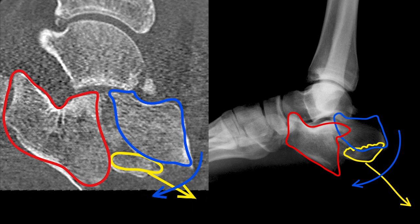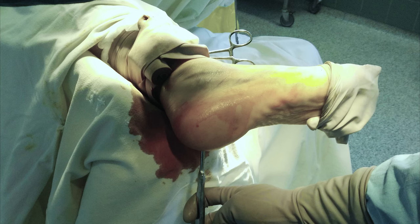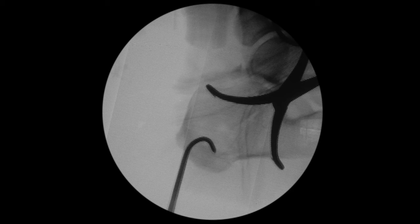Now a short summary. Due to the fracture pattern, we could reduce it in a mini-invasive manner, but it was necessary to make a sinus tarsi approach to reduce the lateral articular fragment. First of all, through a stab incision on the medial surface, I introduced a hook. Using that hook, I disimpacted and pulled down the tuberosity fragment. Then I made two stab incisions at the lateral surface.